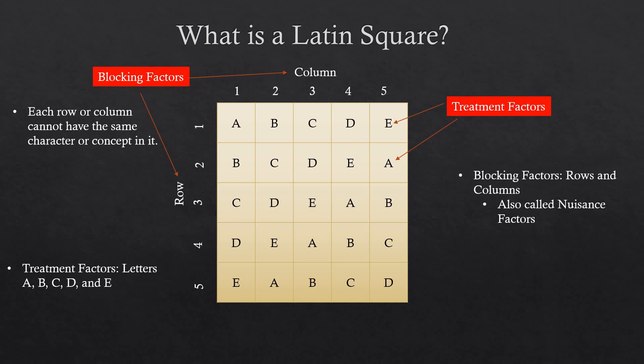For a Latin square design, the number of rows and columns has to correspond to the number of treatment levels. So if we have four treatments, then we need to have four rows and four columns in order to create a Latin square. An assumption that we make when using a Latin square design is that the three factors — treatment and the two blocking factors — do not interact. If this assumption is violated, the Latin square design error term will be inflated.